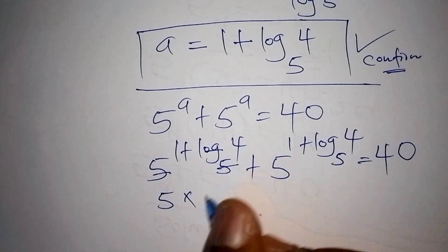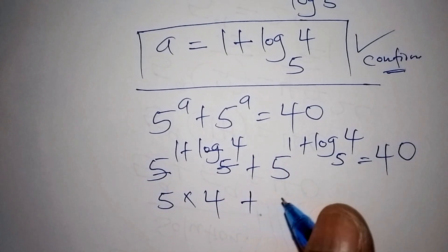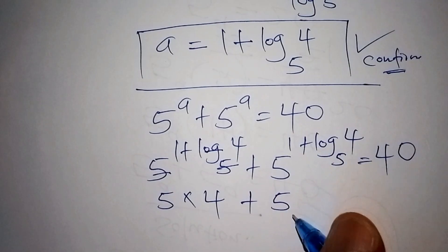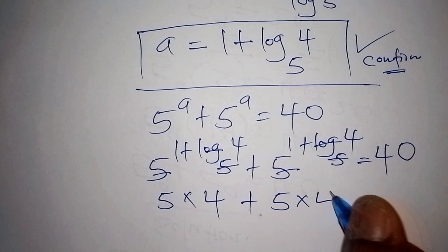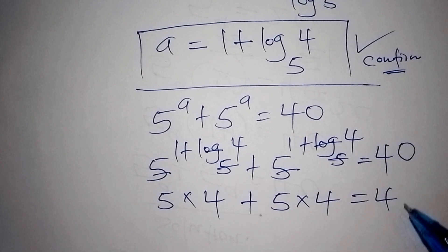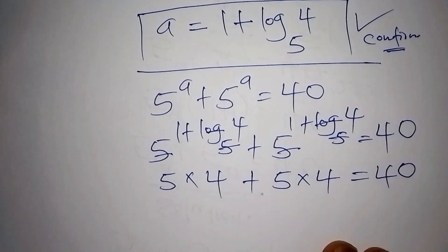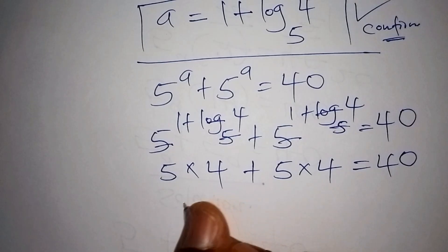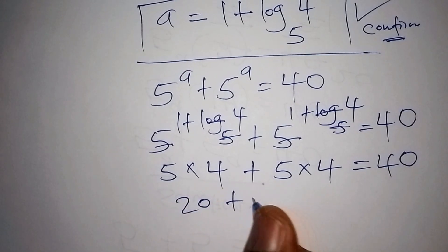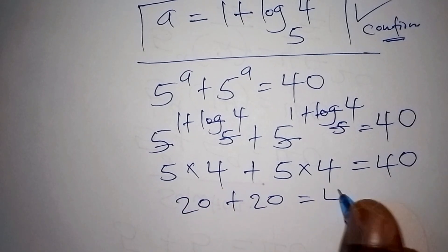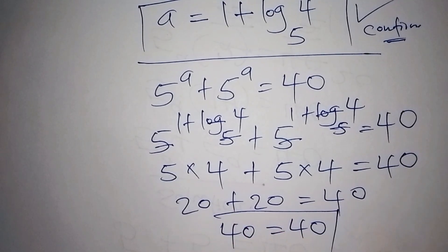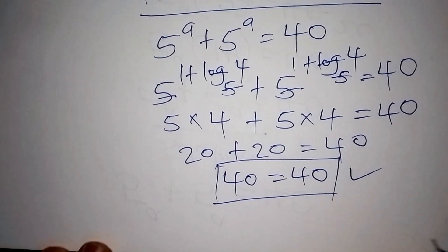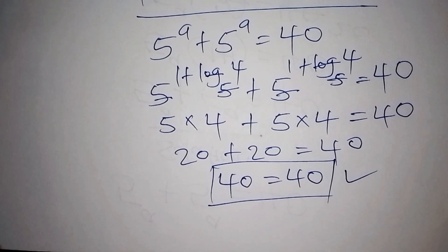Log base 5 cancels the 5, leaving 4. So we get 5 times 4 plus 5 times 4 equals 20 plus 20, which equals 40. That is equivalent to 40, confirming our answer is correct.